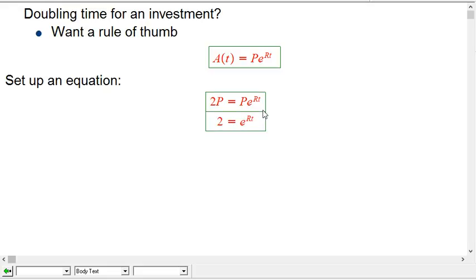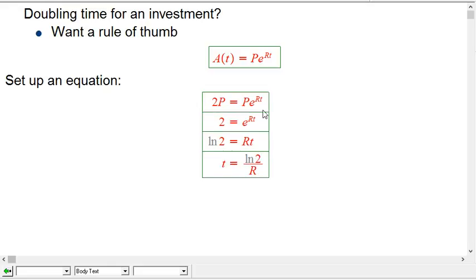Immediately verifying our observations that the principle doesn't really matter, the P's cancel out. Now we can take the natural log of both sides. This is exactly a great situation of turning an exponential equation into a logarithmic equation: ln 2 = Rt, so t = ln 2 / R.